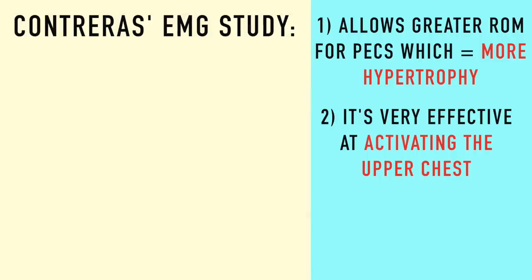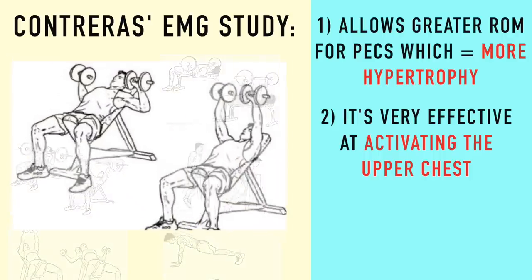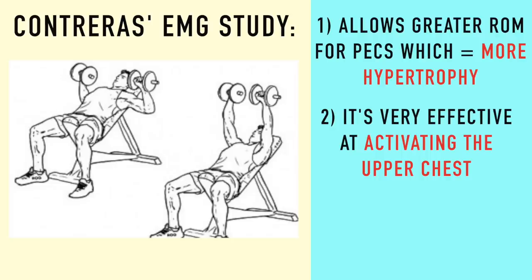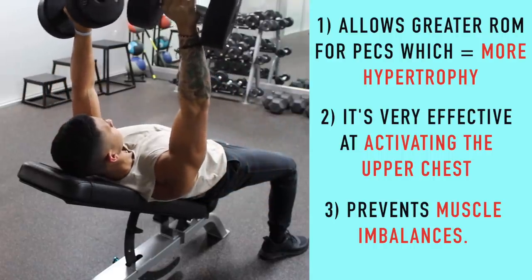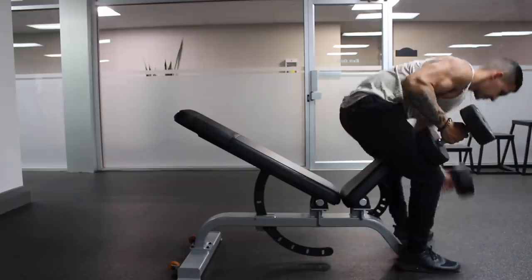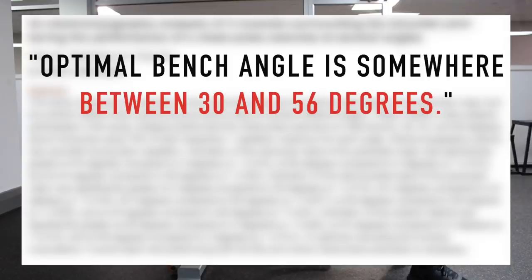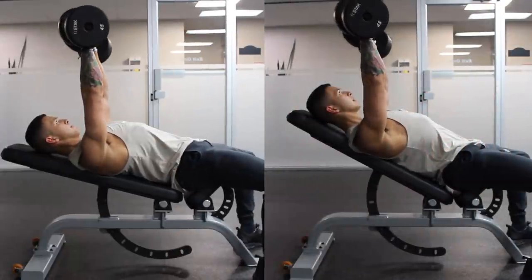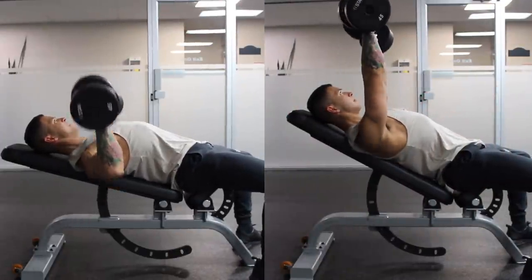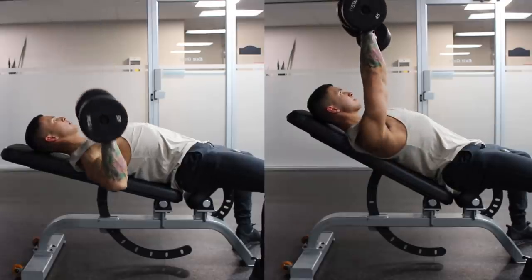An extensive EMG study by Brett Contreras analyzed chest activity with 15 different chest exercises, and incline dumbbell presses were found to be the most effective compound movement for the upper chest. Third, it more effectively prevents muscle imbalances from forming since each hand is responsible for an equal amount of weight. As for the best bench angle, EMG studies have shown that an optimal bench angle is somewhere between 30 to 56 degrees, with higher anterior delt activation as the angle increases. I personally find that 30 and 45 degrees best activates my chest, so I'd suggest performing a couple sets at both angles.